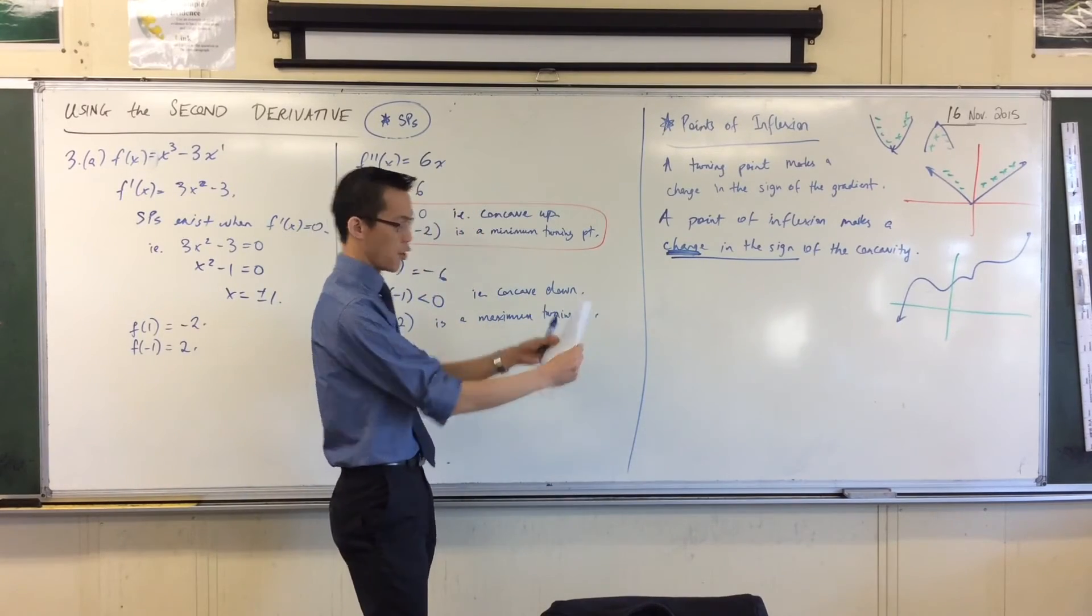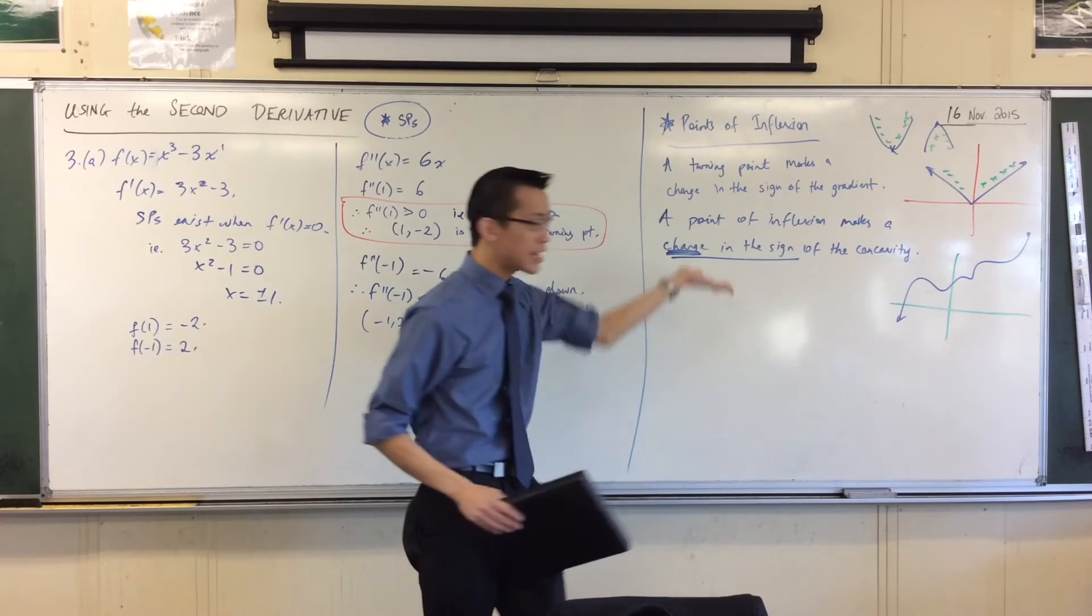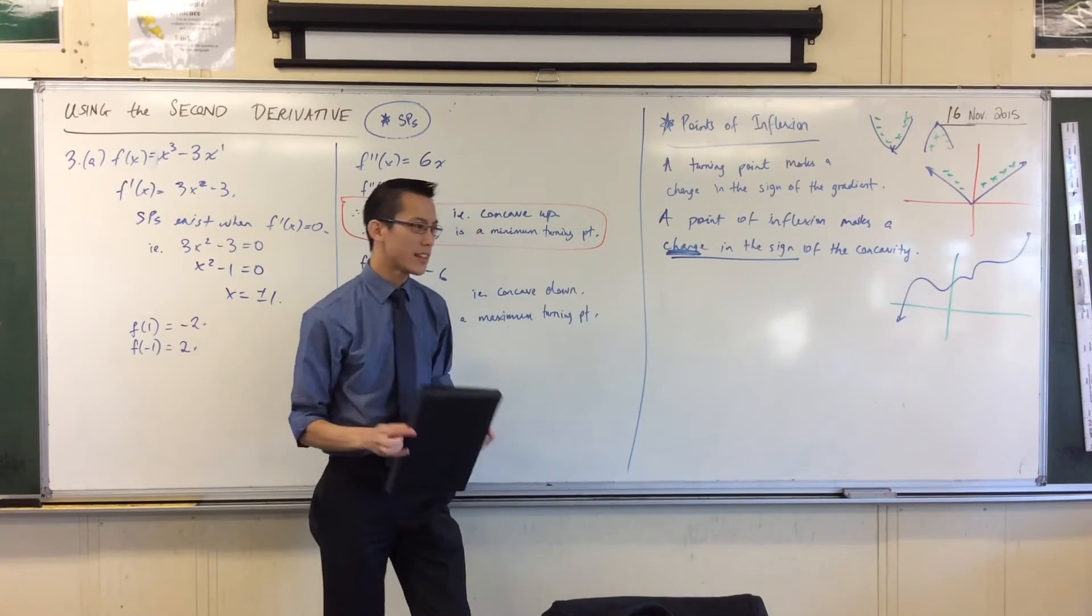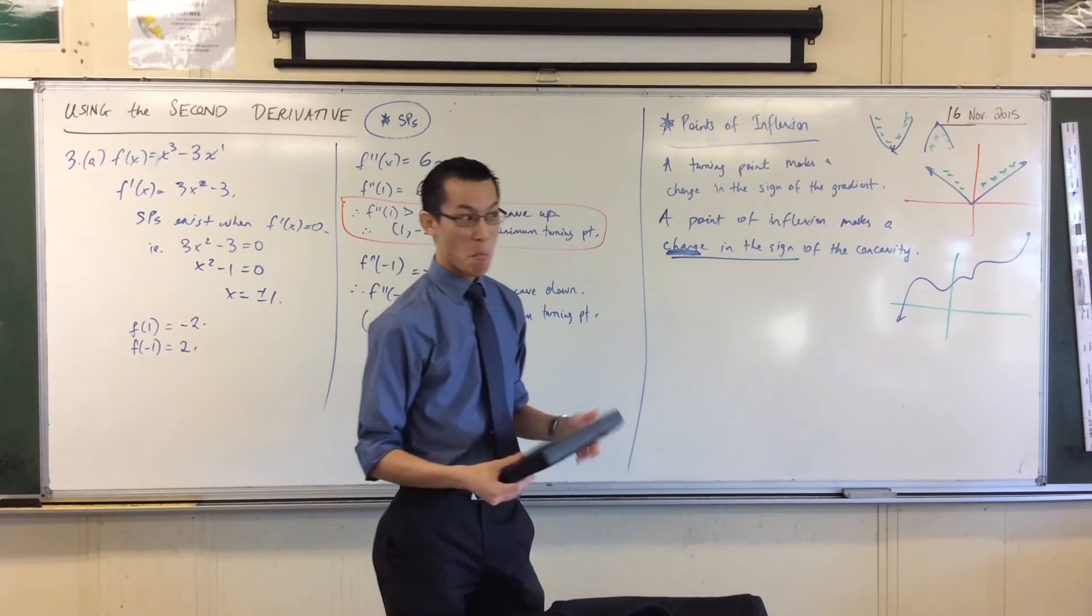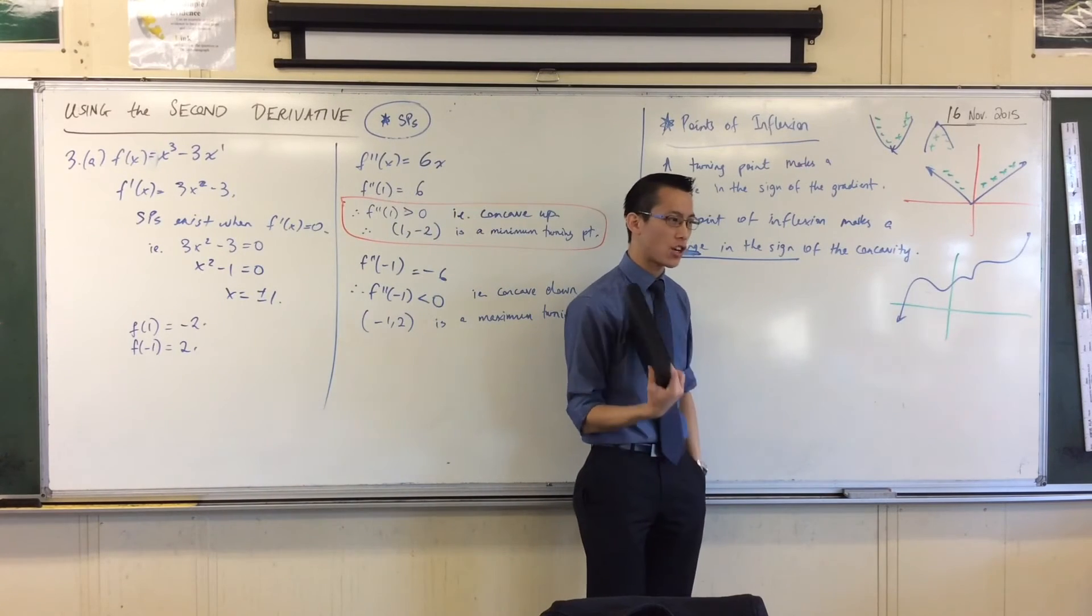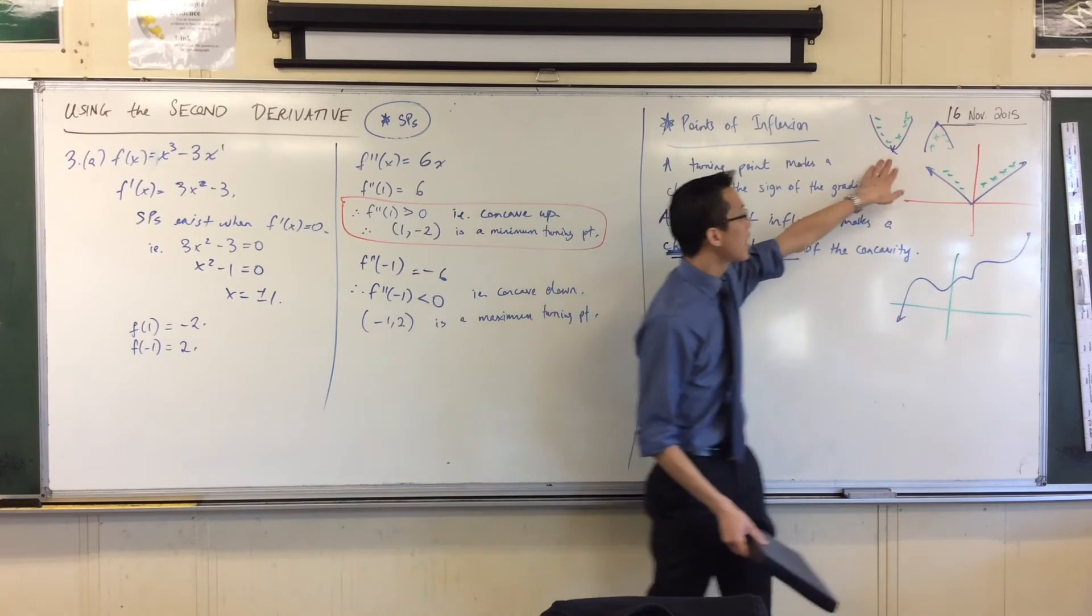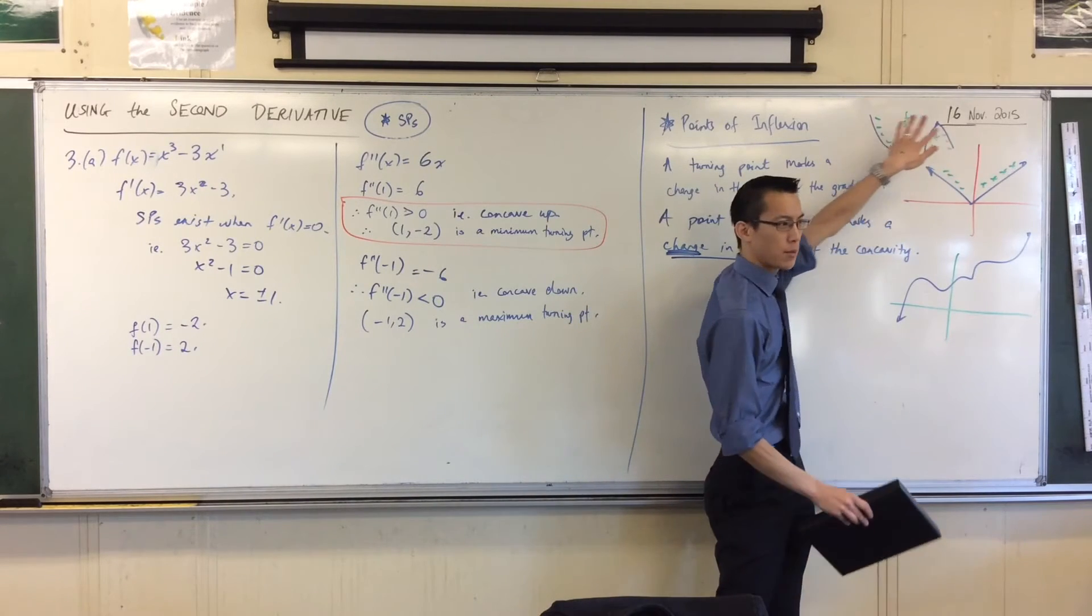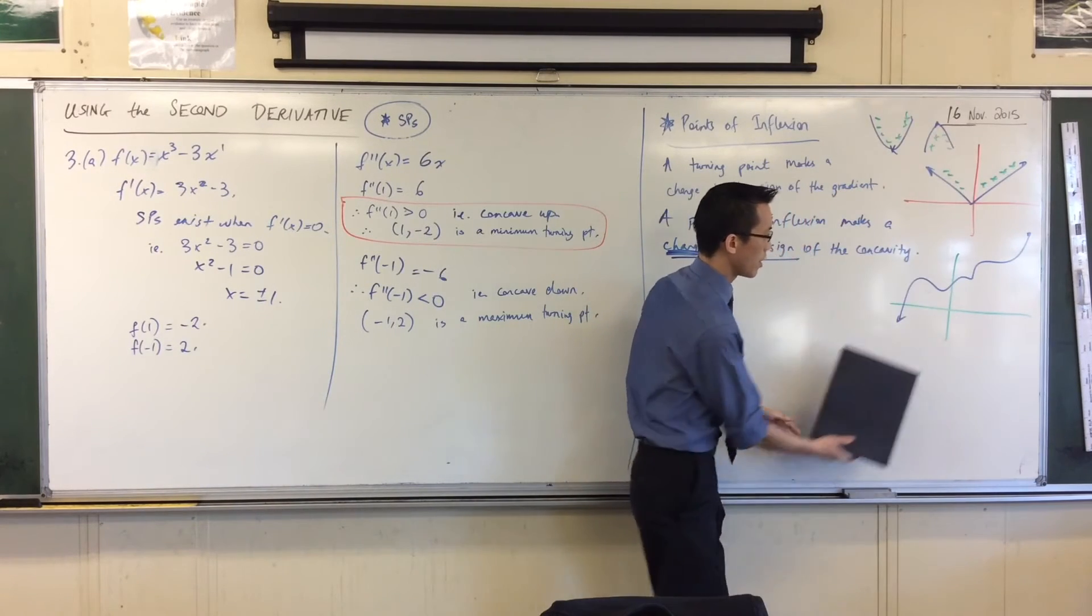For example, you have a look at this. Now admittedly this is a rather low-tech way of doing it, but it works. If I want to find where is it that the concavity changes, and again I'm thinking about is the cup up or is the cup down? When I have a look, for example, I will cover up some part of the graph.